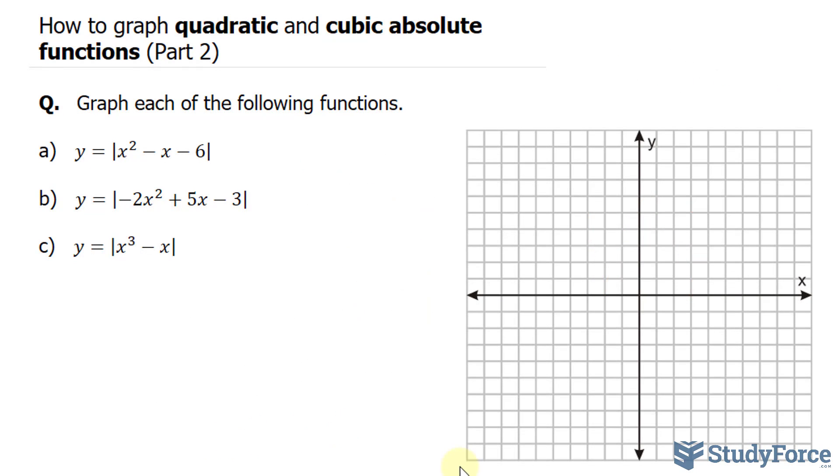So what you see on your screen is the graph for question A. Let's move on to question B. The quadratic in this absolute function can be factored by decomposition. In other words, you multiply negative 2 and negative 3 together, you end up with positive 6. Then you find two numbers that multiply to positive 6 and add to 5. That's 3 and 2.